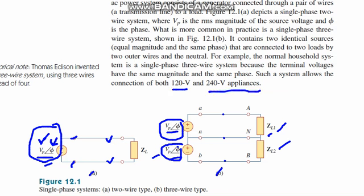In our household systems, we use a single-phase three-wire system. The terminal voltages have the same magnitude, so all loads are in parallel and receive the same voltage. As you can see in the three-wire type diagram, each load has the same voltage with no changes in phase or other quantities.